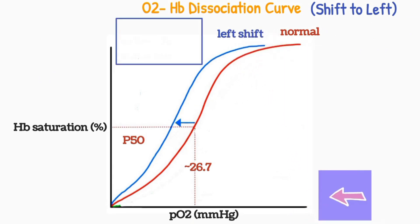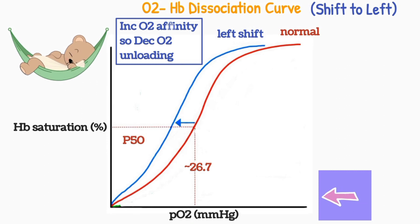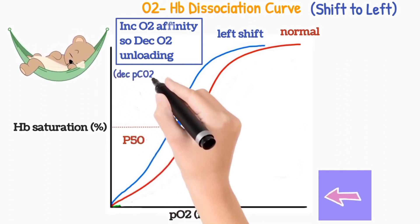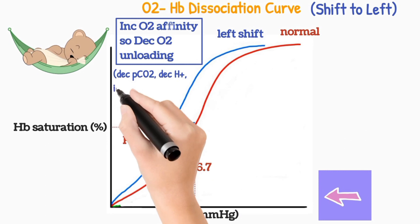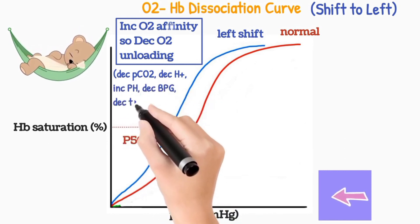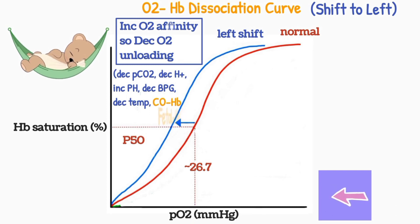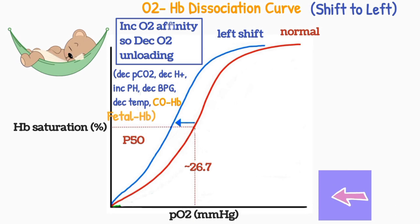The left shift of the oxygen hemoglobin dissociation curve shows increased oxygen affinity of hemoglobin, so there is decreased oxygen unloading in tissues. This occurs in relaxing muscles in which partial pressure of carbon dioxide is low, proton concentration is low and pH is high, 2,3-bisphosphoglycerate is low, and temperature is low. Carbon monoxide poisoning and fetal hemoglobin also shift the curve towards the left side because of increased affinity of hemoglobin to oxygen in both these cases.